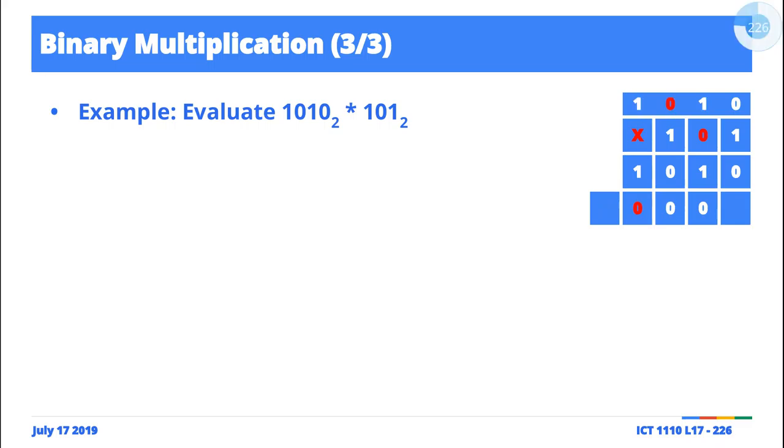It's gonna be zero throughout, right? And then we'll move to the last digit, which is a one. One times zero is zero, one times one is one, one times zero is zero, and then one times one is one. And then what we do now is we add these three rows, right? So zero here we just drop, one plus zero is just one.